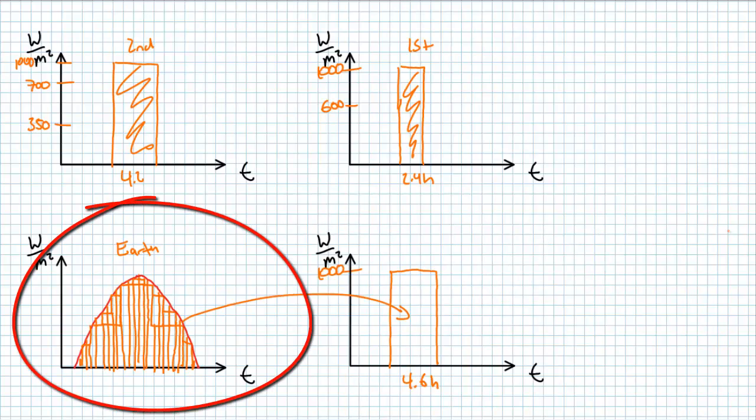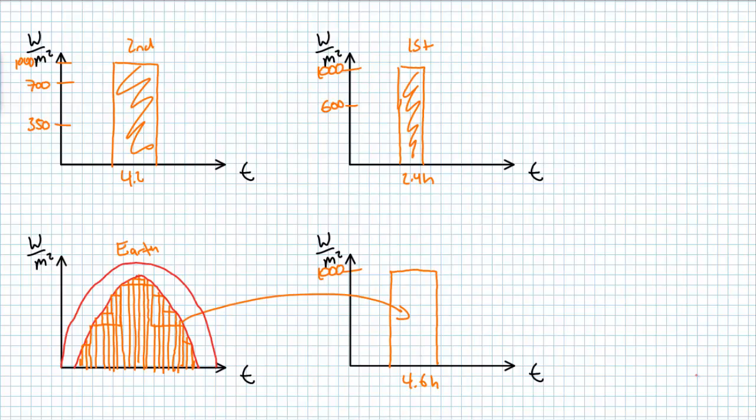Sure, in the summer, the sun rises earlier, shines stronger and sets later. And in the winter, it rises later, shines weaker and sets earlier. But every day on average, it does this. If the area under the curve represents 4.6 kilowatt hours of energy per meter squared, how long would the sun have to shine at full intensity on average to produce the same energy?